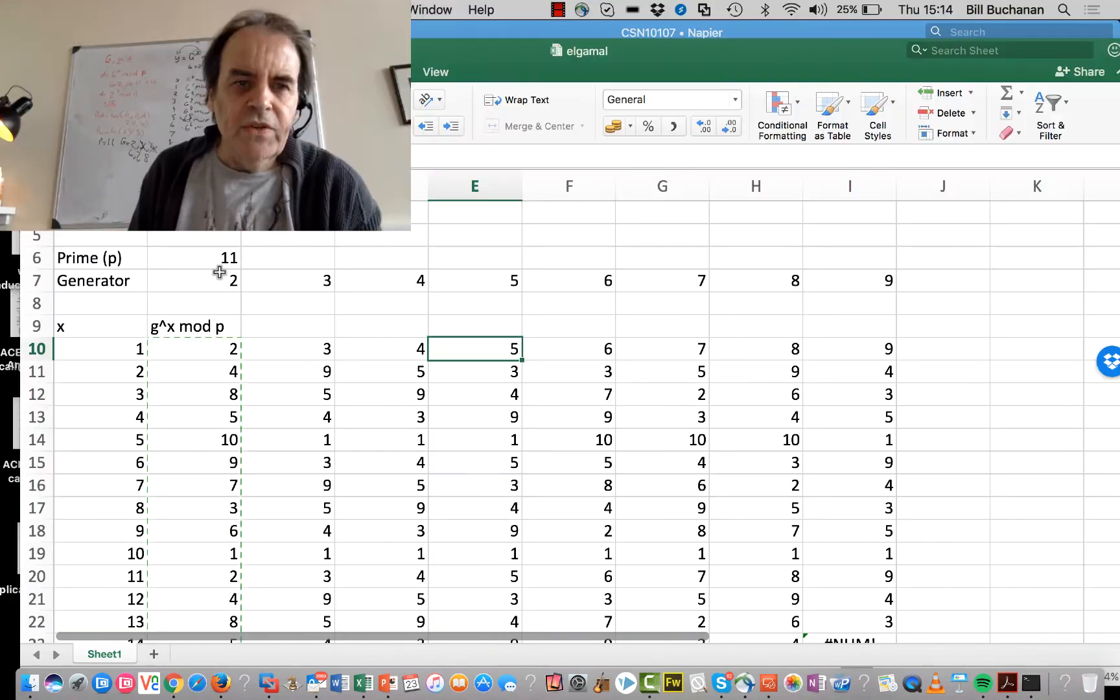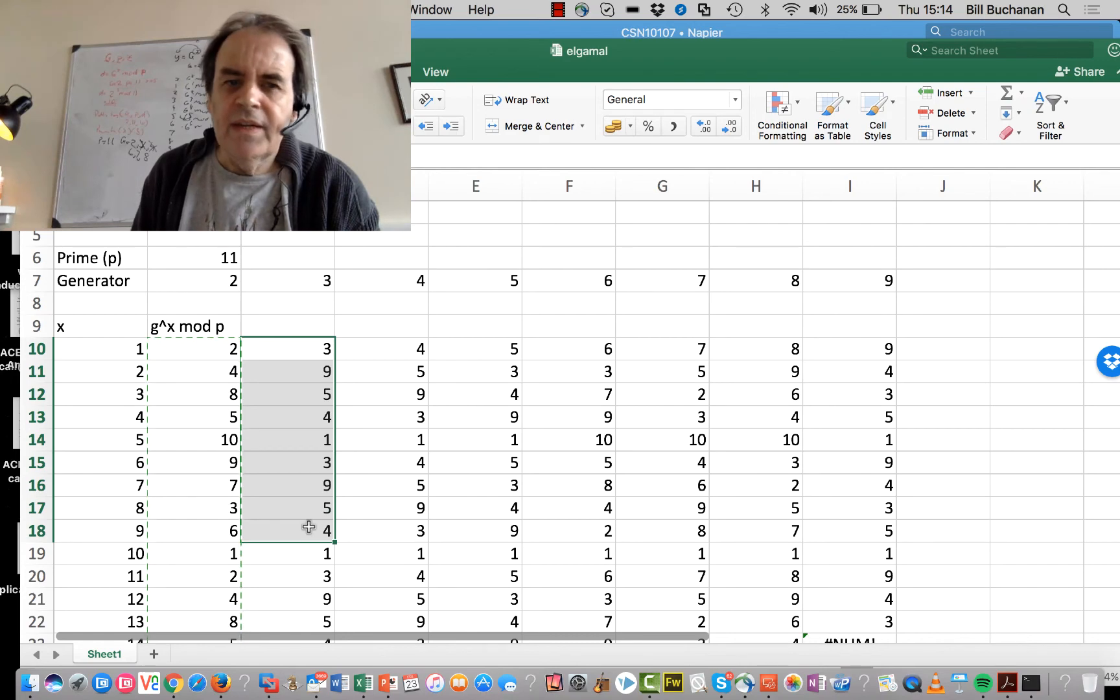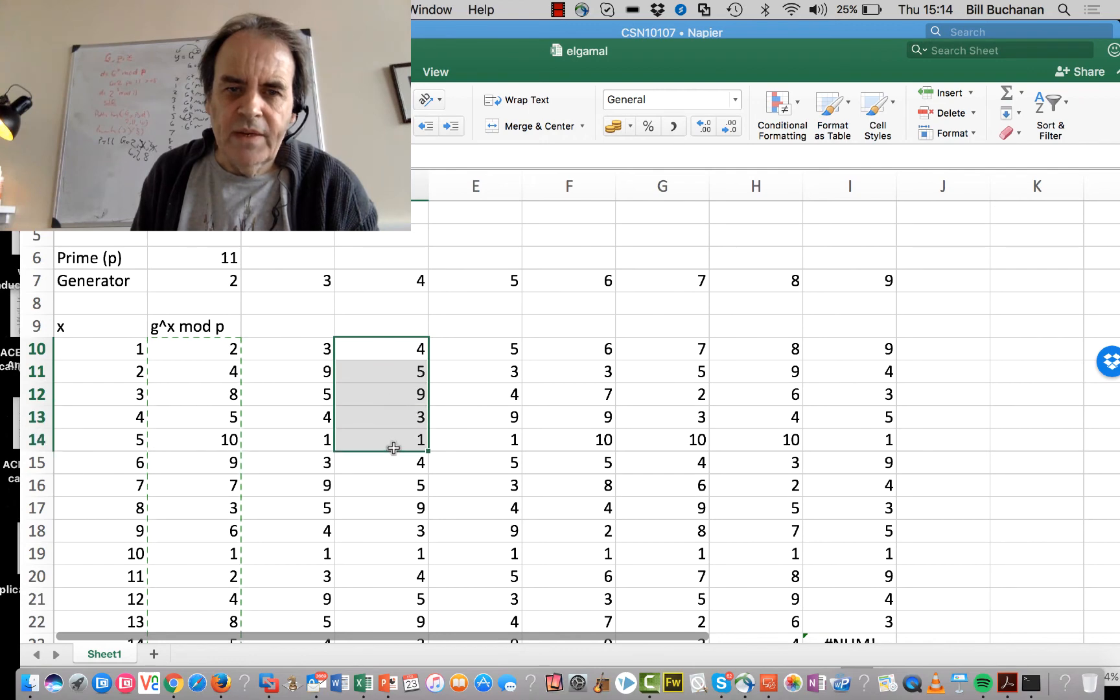I've done a basic calculation in Excel. You can see this one works - there are all the values from 1 to 10. This one doesn't work because it's repeating, this one doesn't work as it repeats again, this one doesn't work, but this one works.